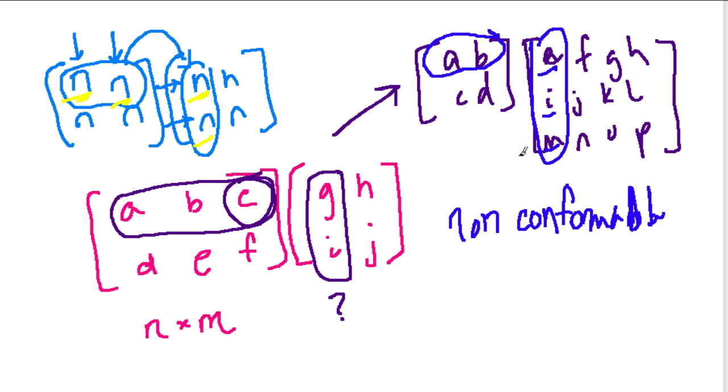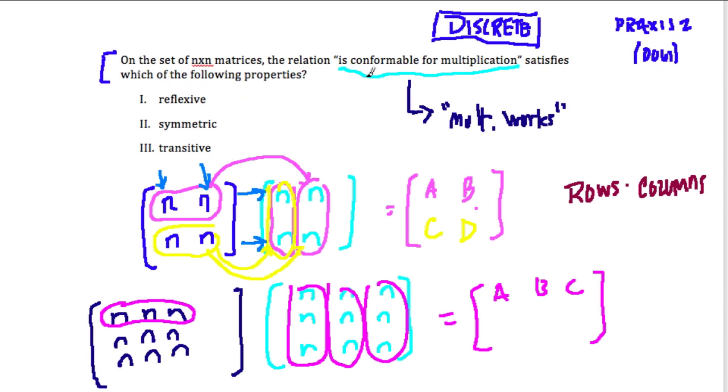Conformable. Well, so if they are conformable with each other, we want to know which of these properties actually work. Okay, well, reflexive means that the function or whatever maps onto itself, and so every element is related to itself.